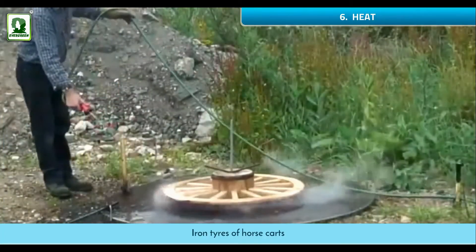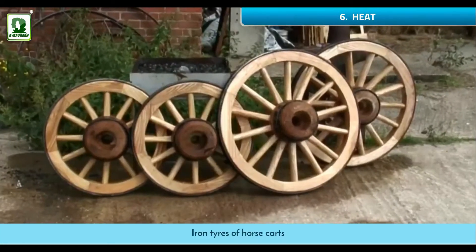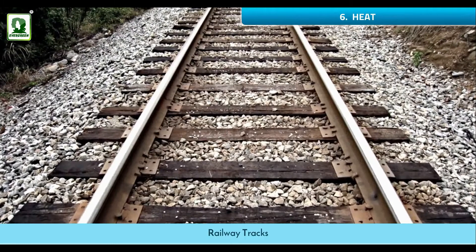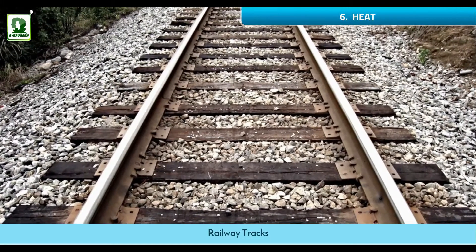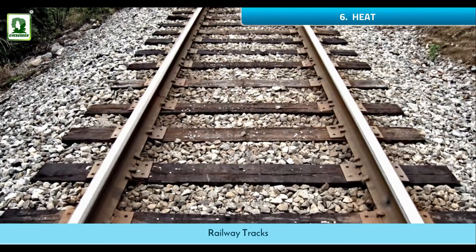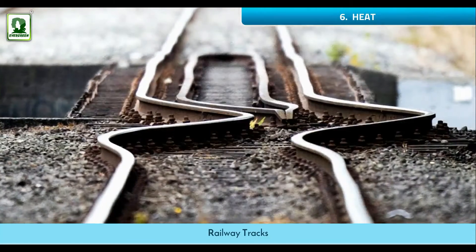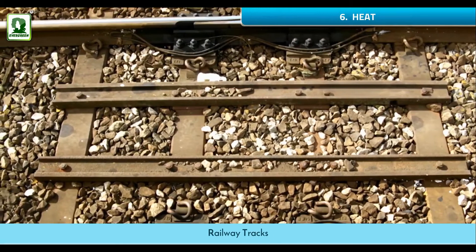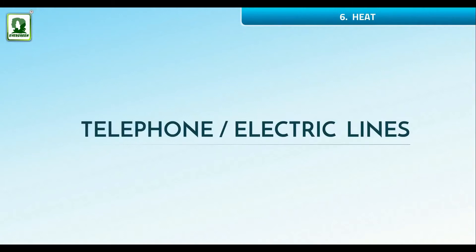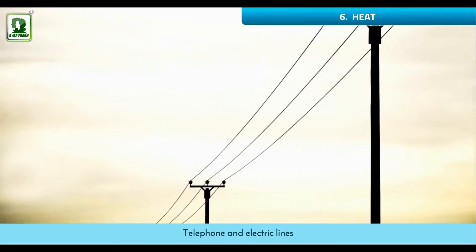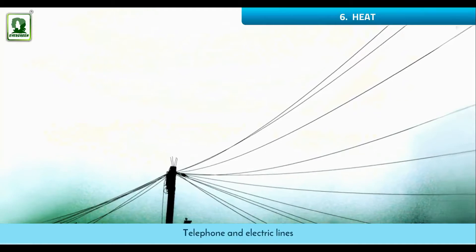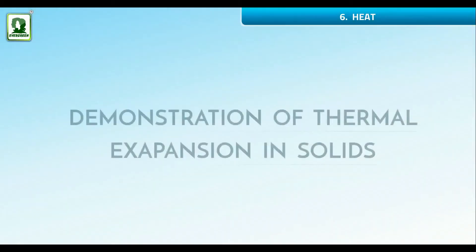Railway tracks: If provision is not made for allowing expansion in summer and contraction in winter, railway tracks can be damaged. To avoid this, they join tapered ends overlapping. Telephone and electric lines: These are kept sagging in summer so that when they contract in winter, these do not break.